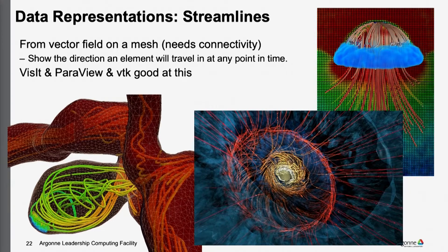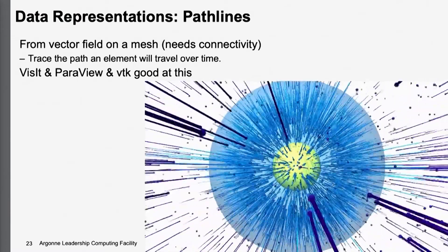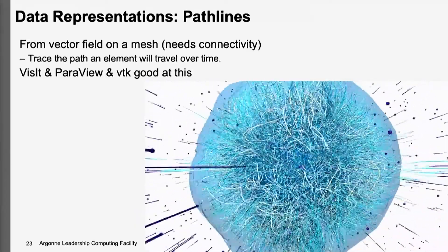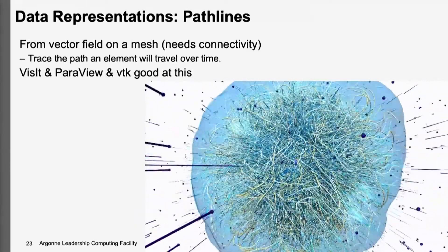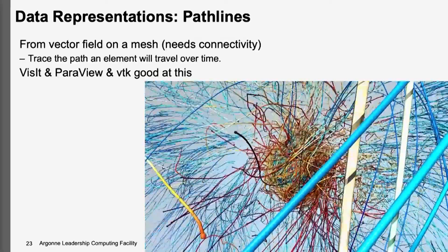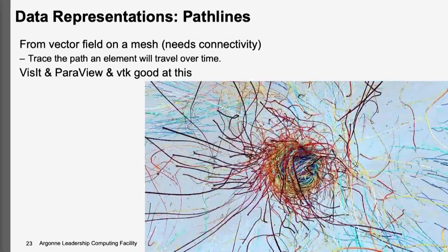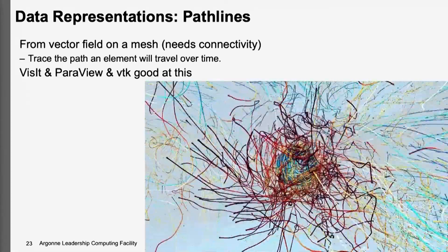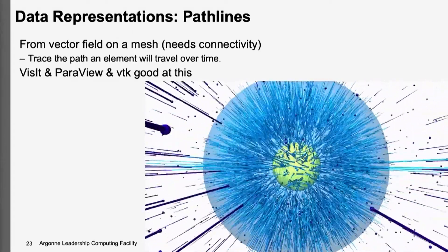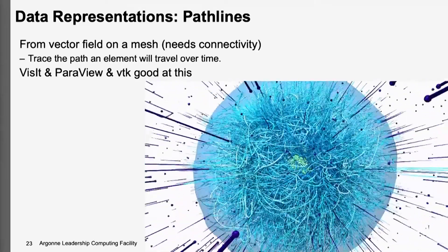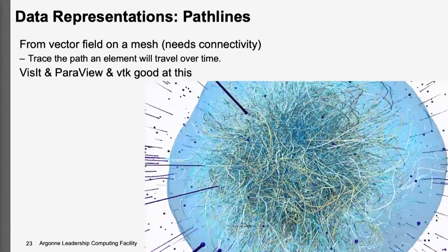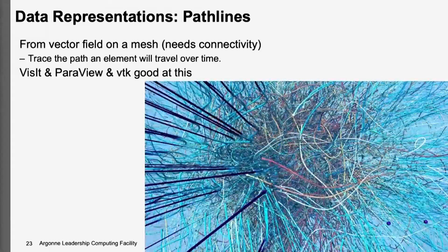Path lines are an extension of streamlines. The main difference is that instead of tracing within a single time step, you trace the path an element will travel over time — from one time step you start at some position, follow where that particle would go, then move to the next time step and trace from there. So you trace it over time, not just within a single time step. It's time-dependent and also more computationally expensive.